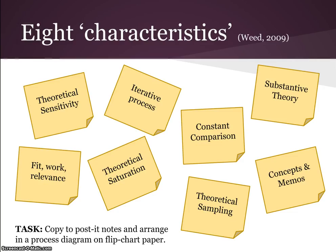I began by talking about the basic characteristics of Grounded Theory, and I used Mike Weed's paper from 2009 just as a way of getting down to the basics. Weed talked about eight characteristics, though some people will tell you there are six, seven, or nine. We went through the exercise of writing down the characteristics on post-it notes, discussing what we thought they meant, and sticking them on flip chart paper based on how they went together as a process.